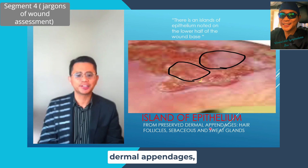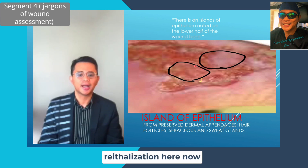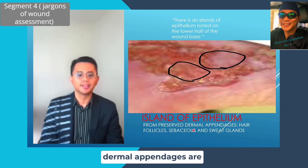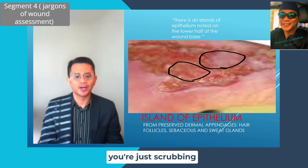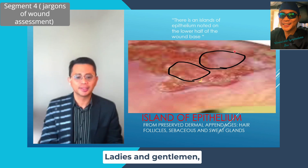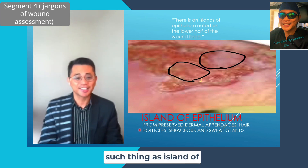When there is preservation of these dermal appendages, re-epithelialization or new epithelium can arise from the middle or center of the wound. Re-epithelialization will therefore be faster because epithelial cells come not only from the wound edges but also from anywhere at the center where dermal appendages are preserved. A common mistake is scrubbing these areas during wound cleansing — do not harm these tissues; the concept of 'do no harm' applies here. Now you know there is such a thing as islands of epithelium.